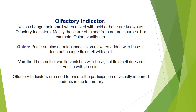Olfactory indicators are indicators which change their smell when mixed with an acid or base. They are mainly obtained from natural sources. Examples include onion, vanilla, and China rose. The paste or juice of onion loses its smell with a base but does not change its smell with an acid. Vanilla's smell vanishes with base but remains in an acidic solution.